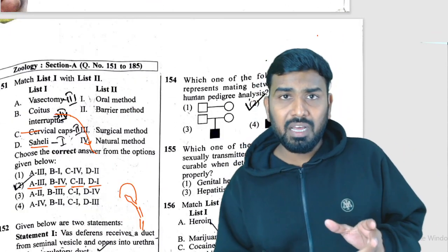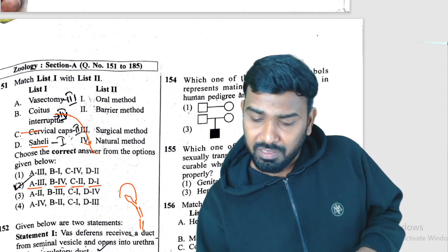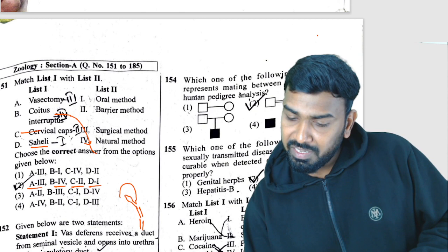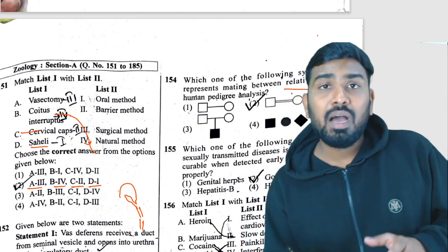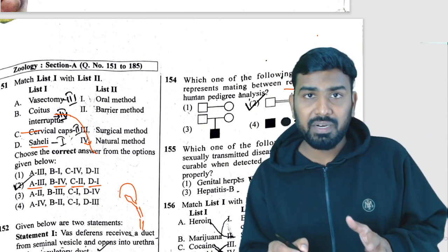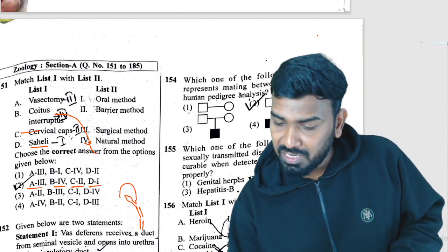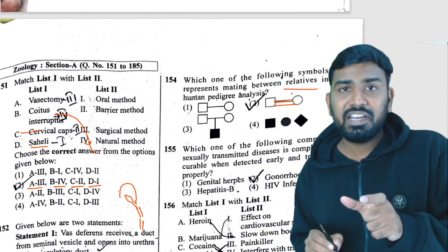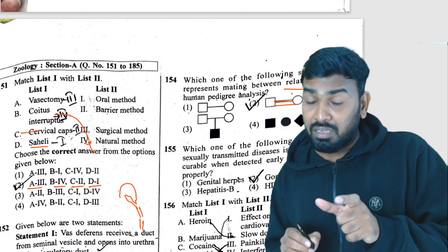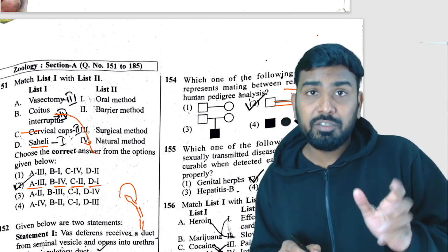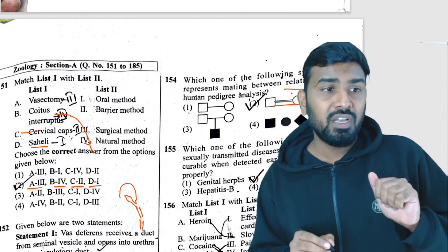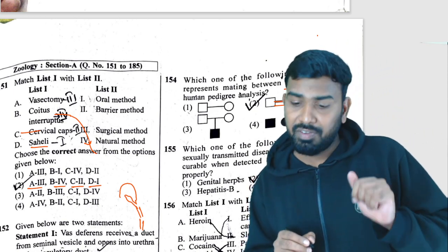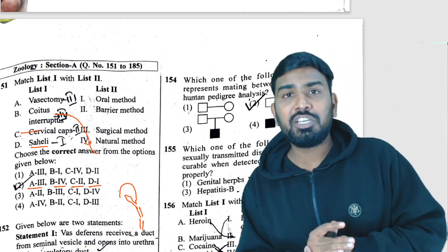Question 154 is about pedigree chart symbols. The symbol with double lines between male and female represents mating between relatives — consanguinous marriages. Two lines between the male and female in the pedigree indicates a consanguinous marriage, i.e., mating between two close relatives.